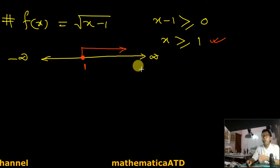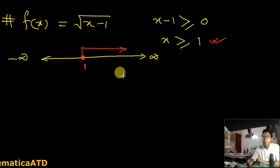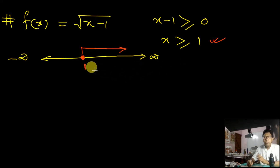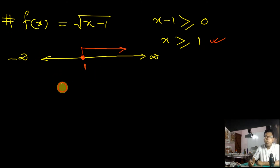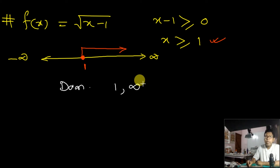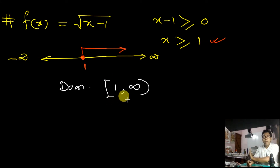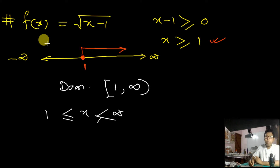Now if you draw the real line going from negative infinity to positive infinity and place the value 1 on it: since x ≥ 1, you start from 1 and go to the right toward infinity. Infinity is not a point — it is a sense of increasing numbers and you can go on and on to the right of 1. So the domain is [1, ∞).